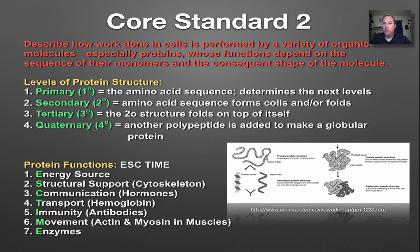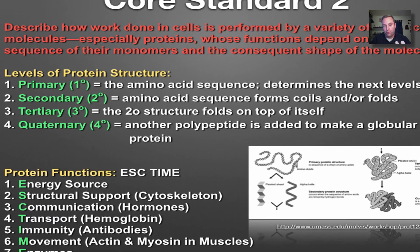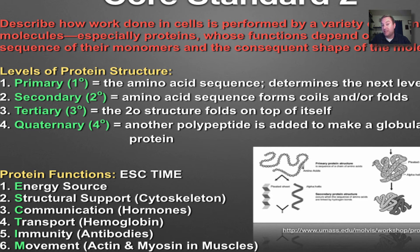Core standard number two looks at how the shape of a biomolecule determines its function. There's nothing more important than when it comes to proteins, because their shape follows their function. Protein structure has four levels: primary, secondary, tertiary, and quaternary. Primary is the most important, because it's going to be the amino acid sequence, and the sequence of amino acids is going to determine what happens in the secondary, tertiary, and quaternary level. At the secondary level, you're going to create folds and pleats, as you can see down here in the picture below.